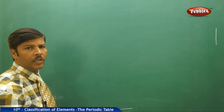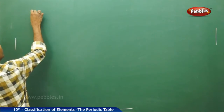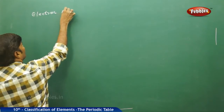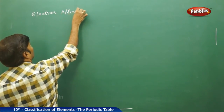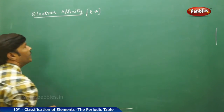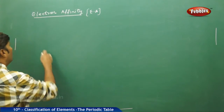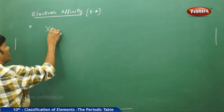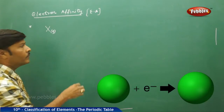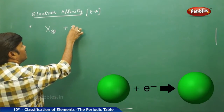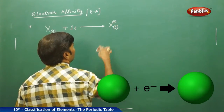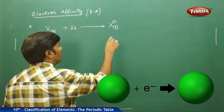The next part of discussion in this periodic table chapter is electron affinity, given by Ea. If you take electron affinity — what do you mean by electron affinity — you take a neutral isolated gaseous atom; when it gains an electron, it forms a uninegative gaseous ion with the release of energy.